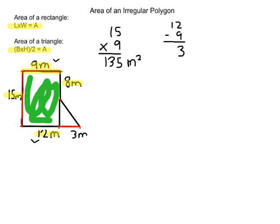Now we need to figure out the height of the triangle, using only the square part of the triangle. We have 8 meters on one side going from there to there, and we use the opposite side — the 15 meters — to find the difference. So we go 15 minus 8, and the remaining height of the triangle is 7 meters.